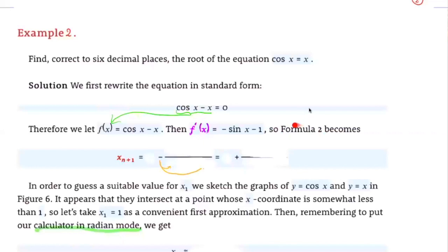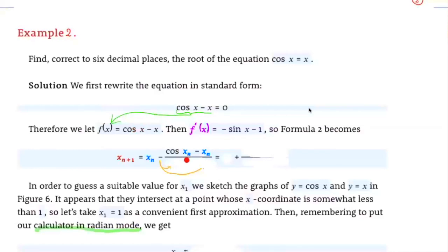The formula for Newton's method says that the n plus 1 approximation is equal to x of n minus f of xn over f prime of xn. So x of n plus 1 equals x of n, minus f of xn divided by f prime of xn. Substituting our f of x, the numerator becomes cosine of xn minus xn.